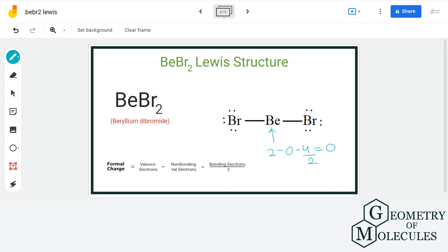For bromine, we have seven valence electrons minus six non-bonding electrons minus two bonding electrons divided by two that gives us a formal charge of zero.